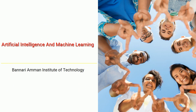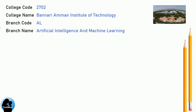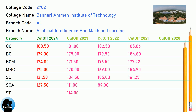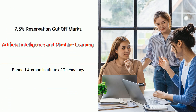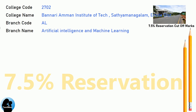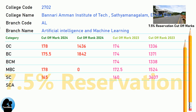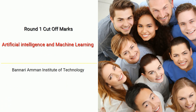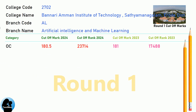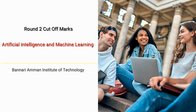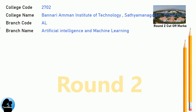DNA Cut-Off for Banari Amman Institute of Technology in Artificial Intelligence and Machine Learning. DNA 7.5 Reservation Cut-Off, Round 1 Cut-Off, and Round 2 Cut-Off for Banari Amman Institute of Technology in Artificial Intelligence and Machine Learning.